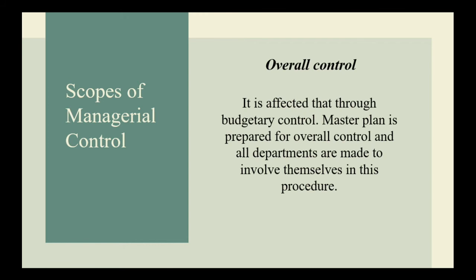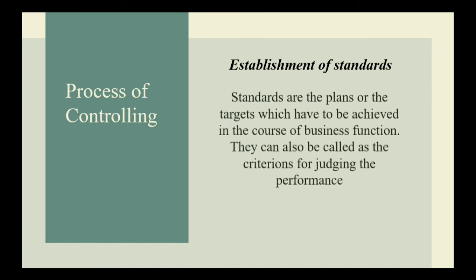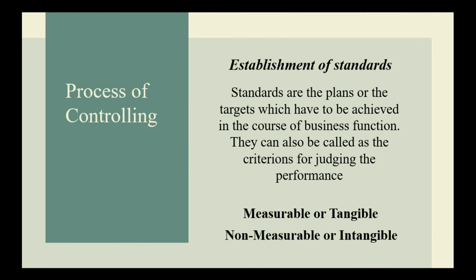Let's proceed to the process of controlling. There are four steps involved in the managerial control system. First, establishment of standards: standards are the plans or targets which have to be achieved in the course of business function; they can also be called the criteria for judging performance. Standards are generally classified into two types: measurable or tangible standards, which can be measured and expressed in the form of cost, output, expenditure, time, and profit; and non-measurable or intangible standards, which cannot be measured monetarily — for example, performance of a manager, devotion of workers, and their attitude towards a concern.